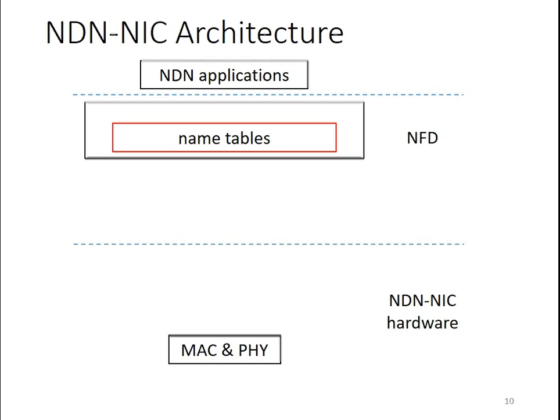Before going into the details, I will present the NDN Unique architecture. On the hardware bottom is the regular NIC with the MAC and physical layer. On the software side, we have the NDN forwarding daemon, which has a few name-based tables for forwarding decisions and packet filtering, and it serves NDN applications on top.